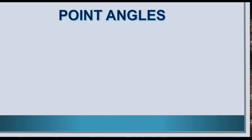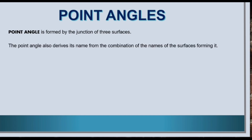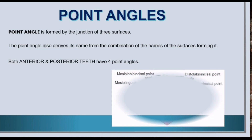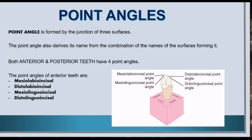Now let us know about the point angles. A point angle is formed by the junction of three surfaces. The point angle also derives its name from the combination of the names of the surfaces forming it. Both anterior and posterior teeth have four point angles. The point angles of anterior teeth are: mesiolabial incisal, distolabial incisal, mesiolingual incisal, and distolingual incisal.